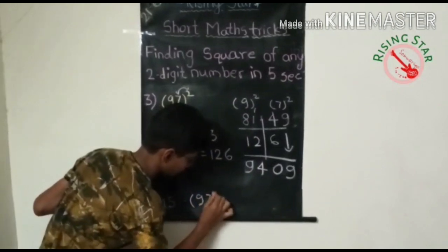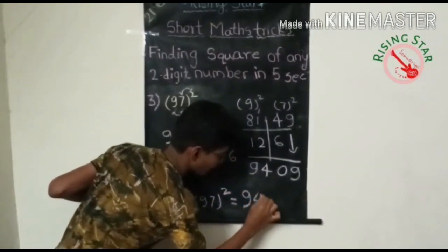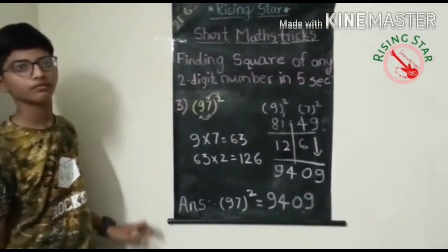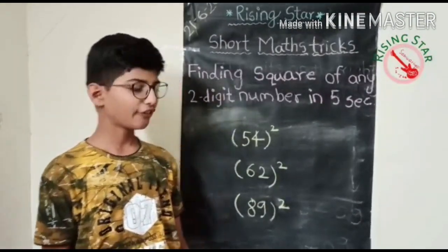So square of ninety-seven will be nine thousand four hundred and nine.